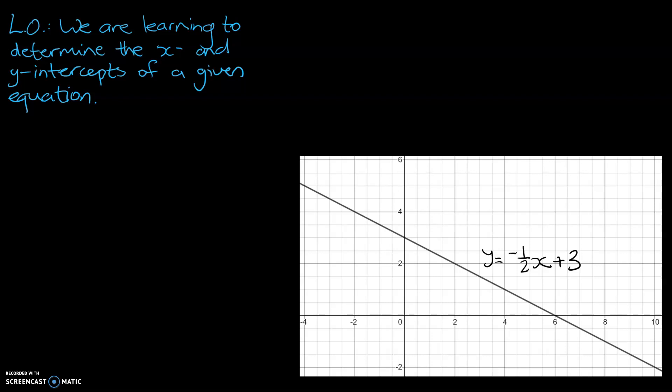And to illustrate our point, what I've got down the bottom is an example of a straight line with its equation. The equation's in black there, and it is y equals negative one-half of x plus three.